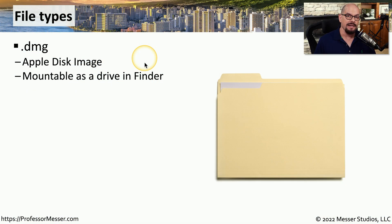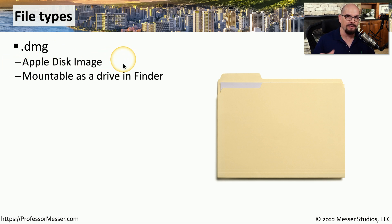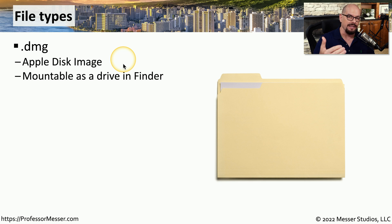If you're working with apps inside of macOS, there are a number of file formats you need to know about. One of these is the DMG file format — the Apple disk image format. If you double-click this file, it will open up inside of your Finder and show you all of the files contained within this disk image. This is commonly used to distribute software, where you can double-click the DMG file, see the list of all files inside that image, and then launch the setup program from inside the disk image.